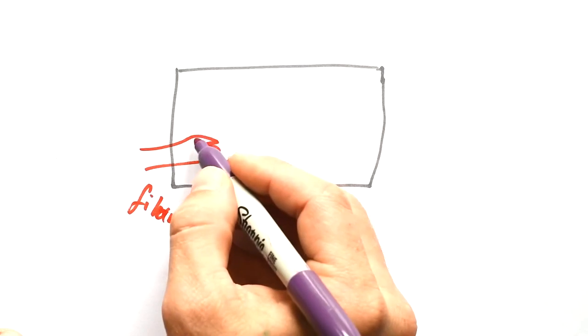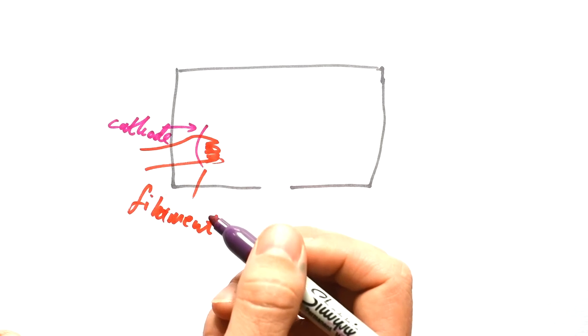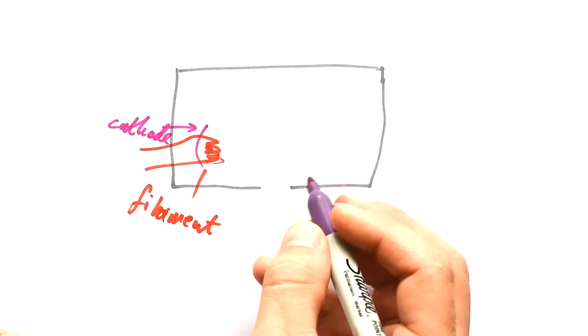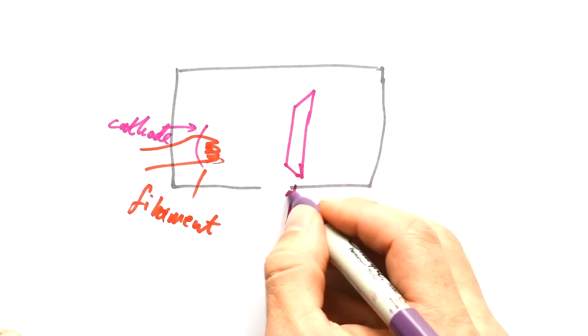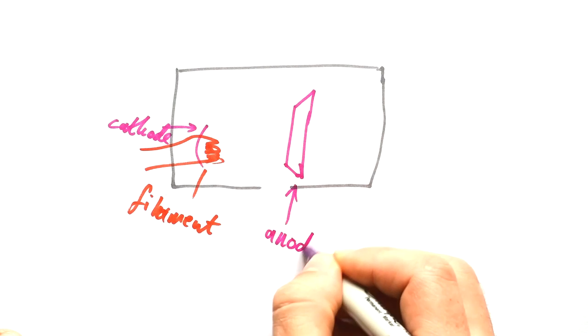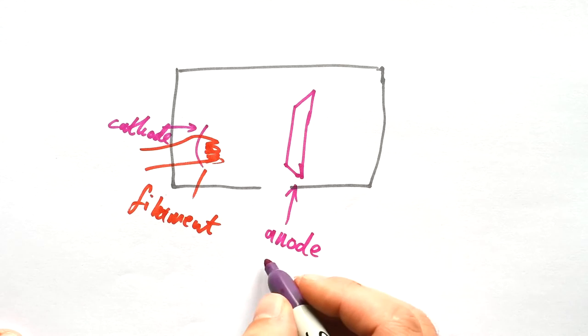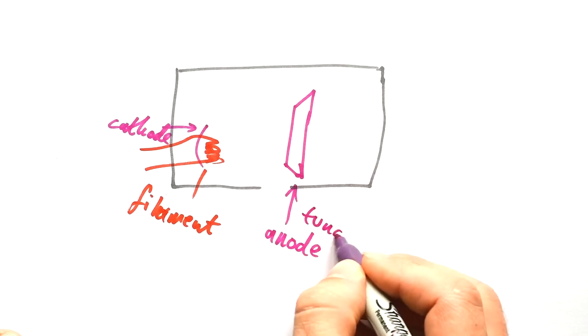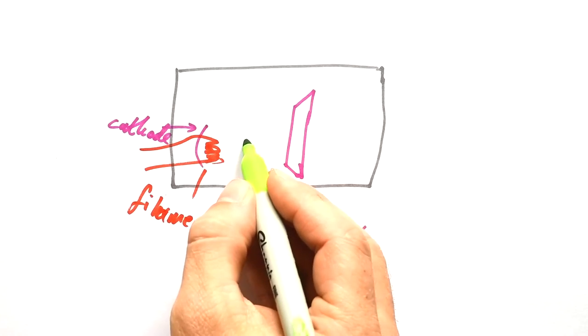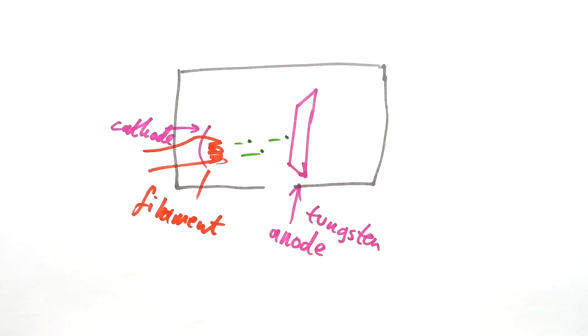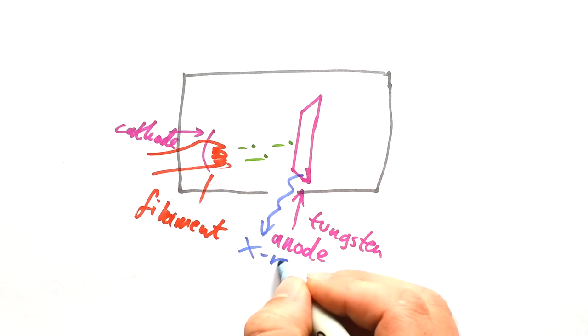They then get accelerated by a cathode. That means it's negatively charged, so that's going to repel the electrons. And then we have the anode, which they're going to be accelerated towards. That's made of tungsten. Because it's an anode, that means it's positively charged. These electrons fly towards the anode, they smack into it. The electrons in the anode are excited, and then they de-excite, therefore emitting X-rays out.